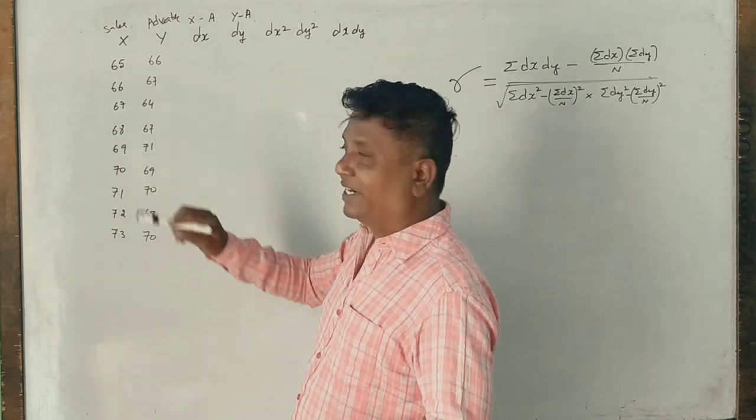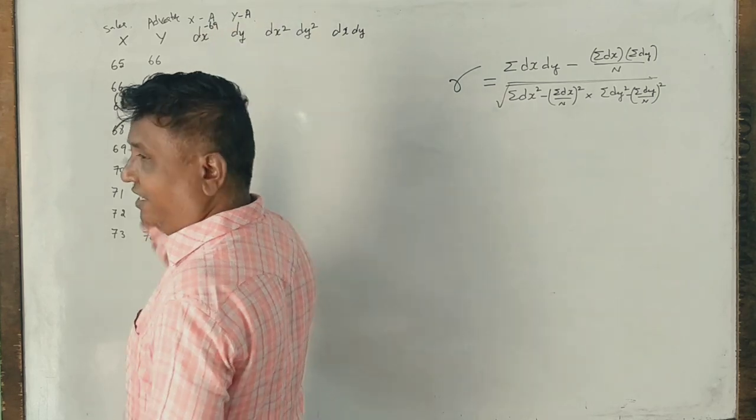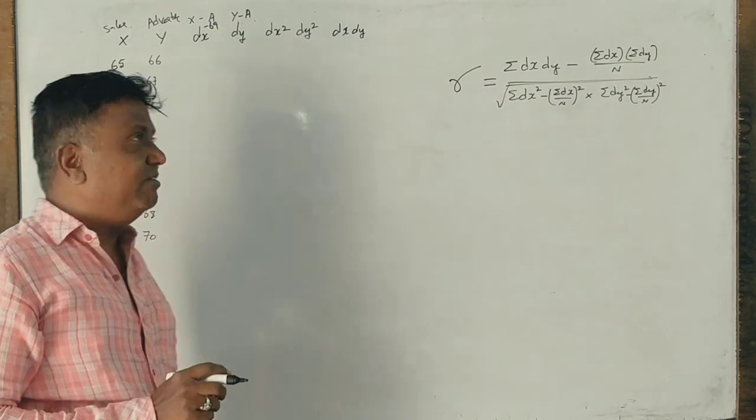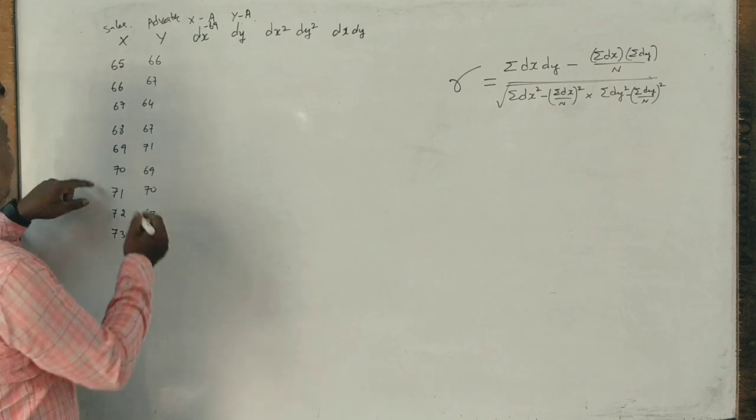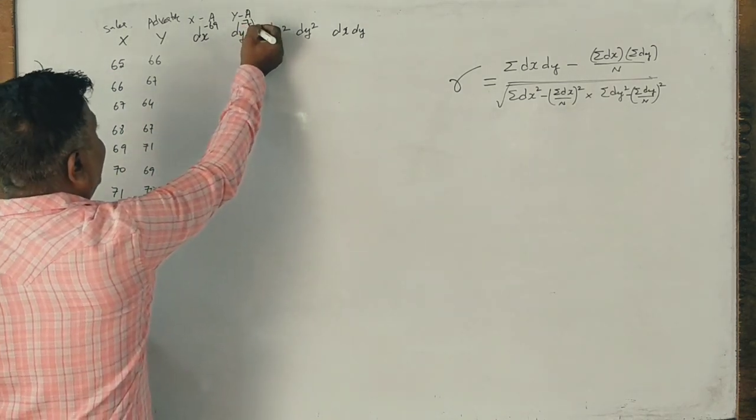Now we put the assumed mean. We have minus 71, we assume.